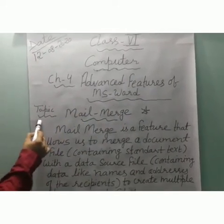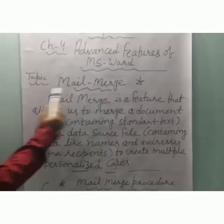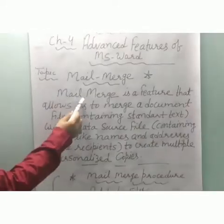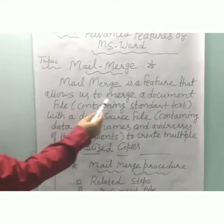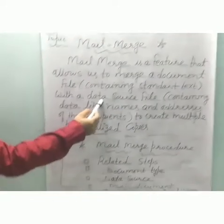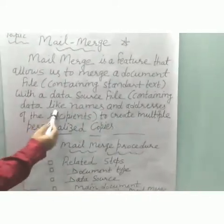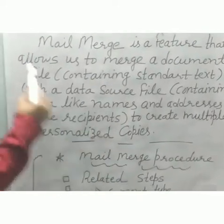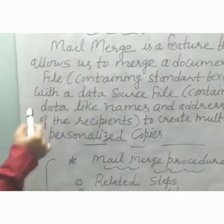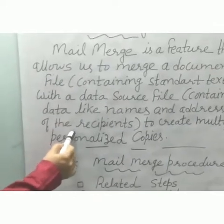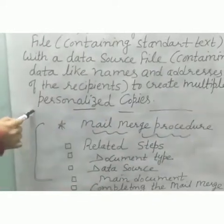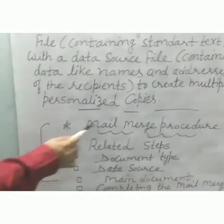Students, today's topic is Mail Merge Feature — means writing a letter through MS Word. Mail Merge is a feature that allows us to merge our document containing standard text with a data source file, containing data to create personalized copies. We can create proper letters through Mail Merge features, writing the name of each recipient and maintaining the data properly.